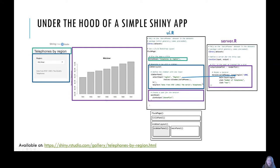The plot output 'phone plot' in the UI corresponds to the server code, which is rendering a plot using the world phones dataset but slicing to only include the columns that have been selected in the select input option, and then outputting the relevant bar plot. This is a really simple example of how reactivity works in Shiny, where a user input generates a specific output. This application and many more are available on the RStudio Shiny Gallery, with lots of simple and more complicated applications, most of which have code available for you to play around with.